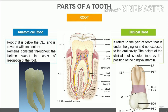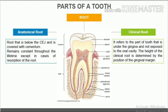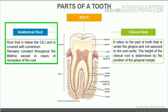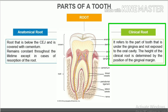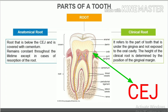On the basis of whether the root is visible in the oral cavity, two types of root terminologies are used. The anatomical root refers to the root that is below the CEJ and is covered with cementum. Its size remains constant throughout the lifetime of the tooth, except in cases of resorption. The clinical root refers to the part of the tooth that is under the gingiva and not exposed to the oral cavity. The height of the clinical root is determined by the position of the gingival margin. The cervical line separates the anatomical crown from the anatomical root and is the junction between enamel and cementum, hence known as the cementoenamel junction or CEJ.